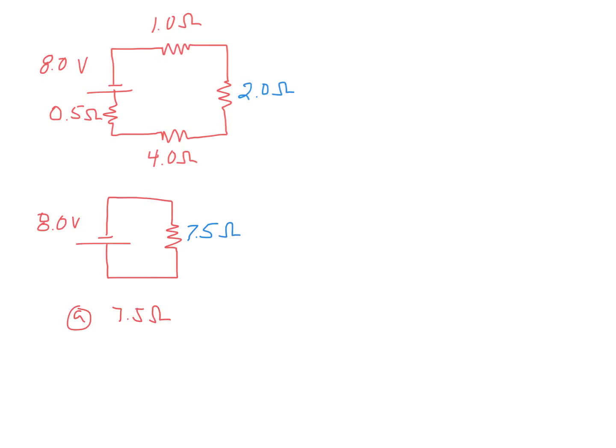Let's find the current. So V equals IR, we have 8 volts, 8.0, current times the 7.5 ohms of resistance. The current in this particular circuit comes out to be 1.1 amps.